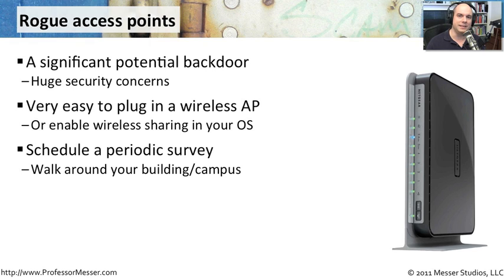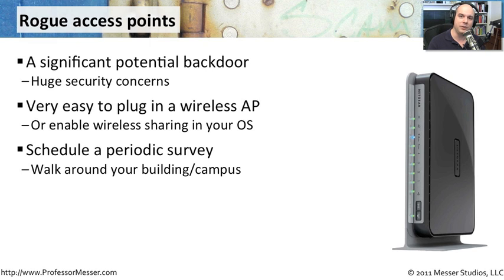To combat this, you either need some type of network access control in place, or you may have to occasionally grab a wireless access point device that can survey the area and start walking around to see if you can find access points on your network that you had no idea were there. There are many great tools to do this — both commercial tools and free tools available from the internet — that will allow you to see what's happening on your wireless network.